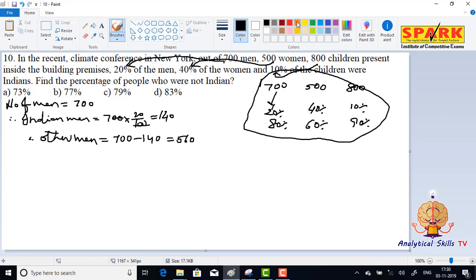Indian women: number of women is equal to 500. Therefore, Indian women is equal to 500 into 40 by 100, that means 200.